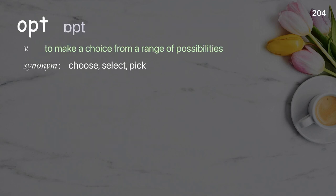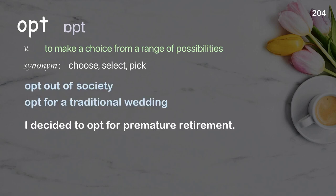Opt: to make a choice from a range of possibilities. Examples: opt out of society, opt for a traditional wedding. I decide to opt for premature retirement.